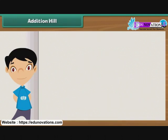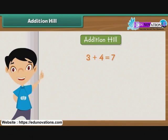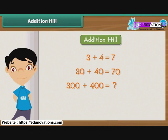There is a very interesting pattern in addition called Addition Hill. We know that 3 plus 4 is 7. What will be 30 plus 40? 30 plus 40 equals 70. What will be 300 plus 400? 300 plus 400 equals 700.